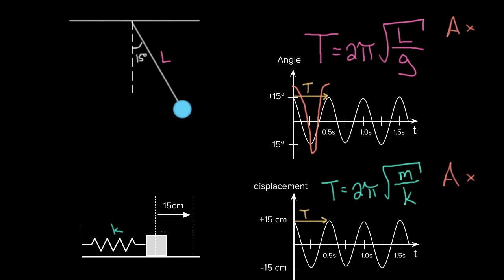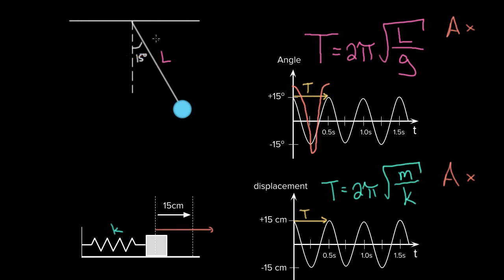The same goes with a mass on a spring: instead of pulling it 15 centimeters, pull it 20 centimeters — it starts higher and gets lower, but the time to complete one full cycle does not vary with amplitude. That might seem strange because these objects do have farther to go, but they'll also be going faster. Faster motion over a bigger distance offsets, so amplitude does not affect the period.